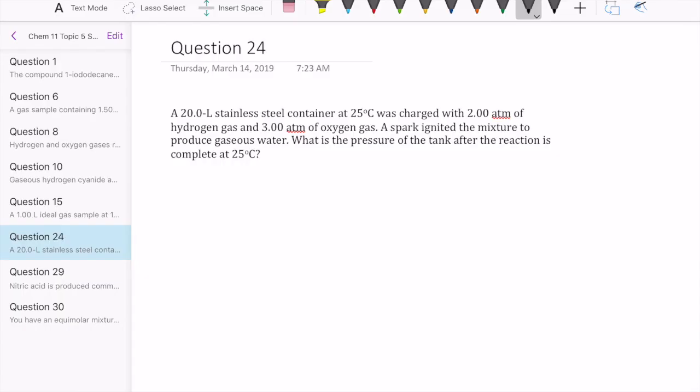Okay, let's take a look at question 24 in topic set 5. This question we're given a container that's filled with some quantity of two gases and then we get a reaction to go between those two gases which produce third gas, water, and then the question is, what's the pressure in the tank after the reaction is complete?